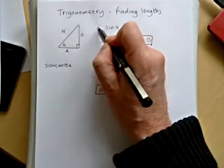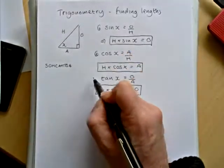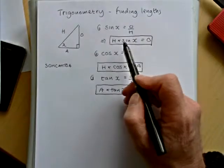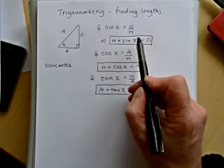Now I've written the three ratios out already, we've just numbered them 1, 2, and 3. And if we're going to find missing lengths, then we can rearrange these formulas to do that.